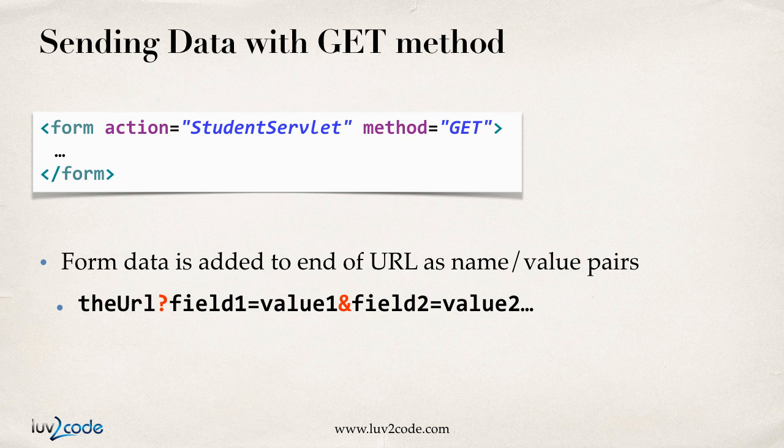When data is being sent using the GET method, the form data is actually appended to the end of the URL as name-value pairs. So here we'll have the URL with a question mark, and then we'll have field one equals value one, with an AND symbol, field two equals value two, with another AND symbol, and so on. That's basically how form data is sent using a GET method.